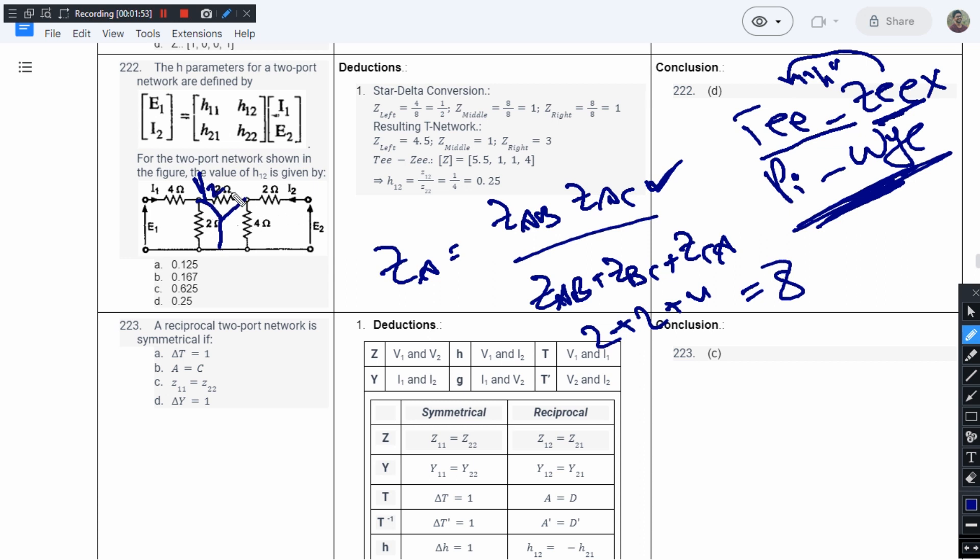Here we will have 1/2. Here it is 4 times 8 divided by 8, which equals 1. Here we have 2 into 4, 8, 8 divided by 8 equals 1. So we have a half, we have a 1, we have a 1. Now let's try to convert it.